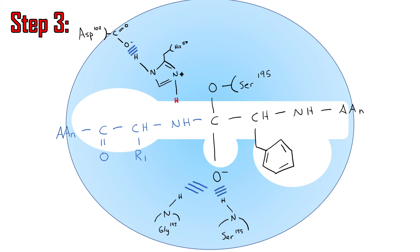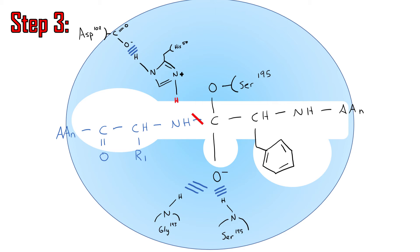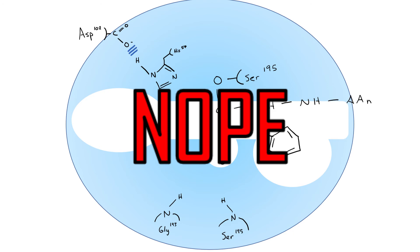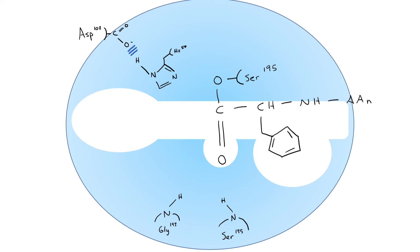Now that our oxygen on the polypeptide is negatively charged and our nitrogen on histidine is positively charged, we have the perfect scenario for our reaction. The polypeptide bond breaks and the electrons grab onto the hydrogen on histidine, because carbon now only has three bonds. Oxygen uses its free electrons from the negative charge to reform the double bond on the carbon. Now we've successfully cleaved our polypeptide chain. If all of this makes sense, you can redo the steps and figure out how to reconfigure the enzyme back to its original state.